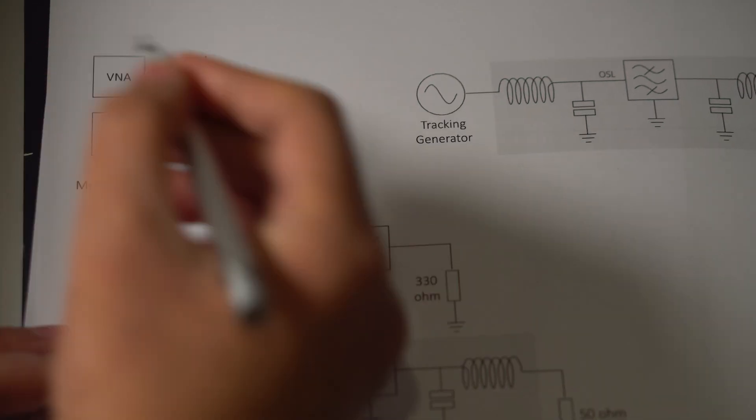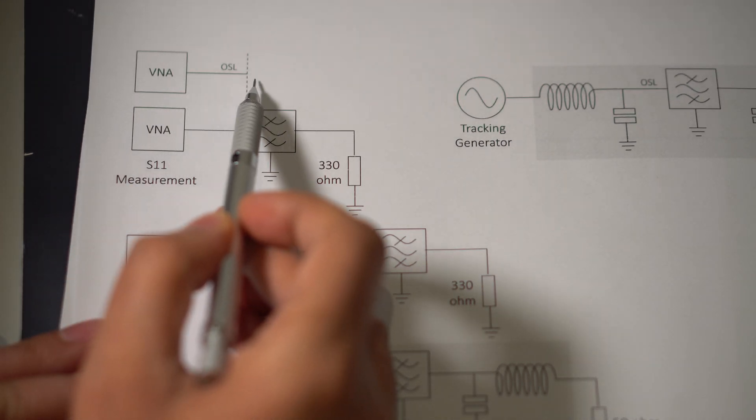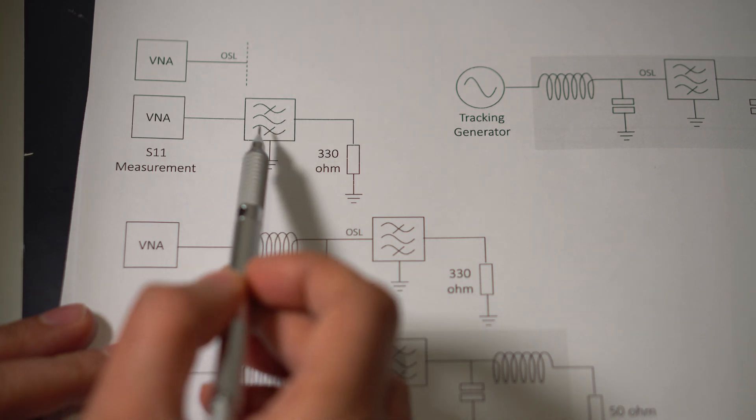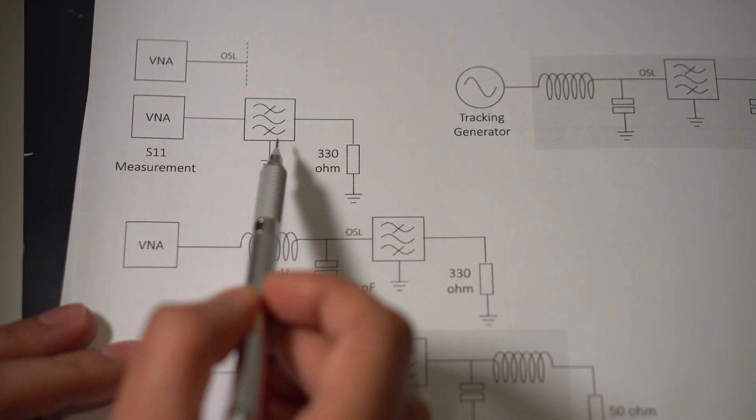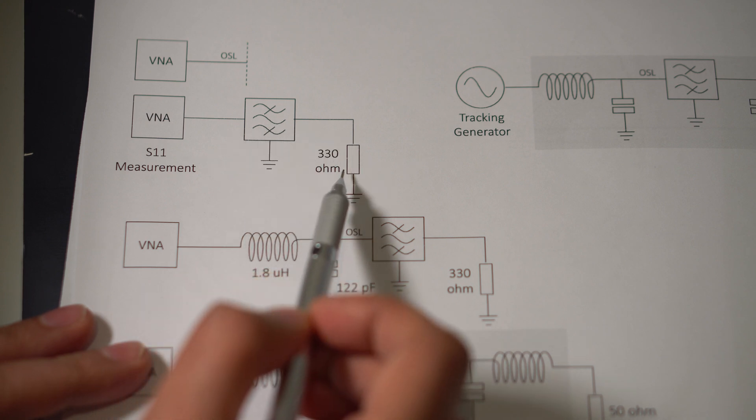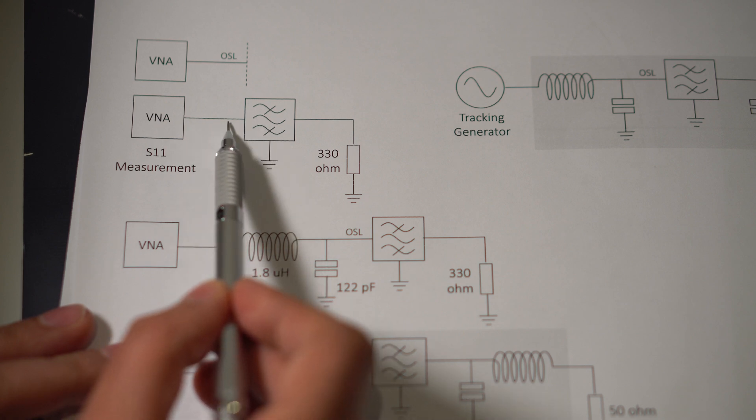To recap, what actually happened was, I had the VNA and there was a cable attached to it. And open short load calibration was done to the end of the cable there. And then, at that point, the filter was attached. And according to the datasheet, this had 330 ohms input and output impedance. So it was terminated with 330 ohms. And the VNA measured the input impedance there.